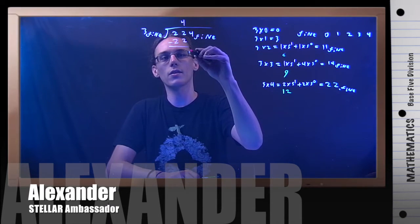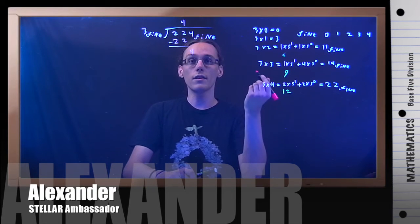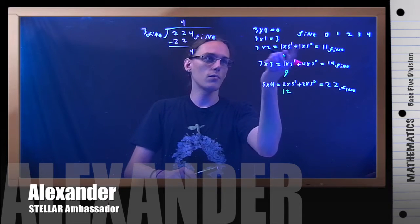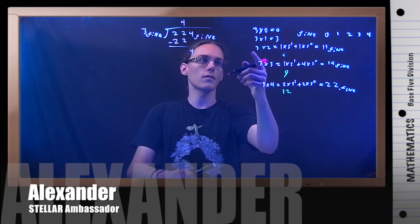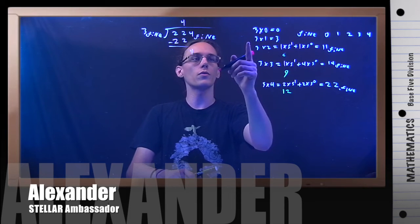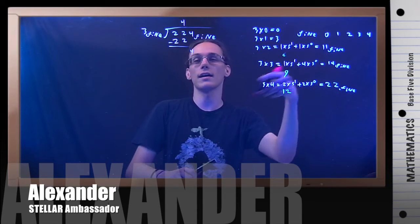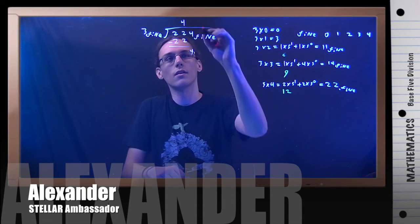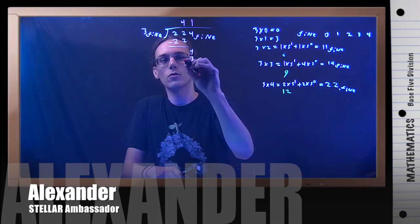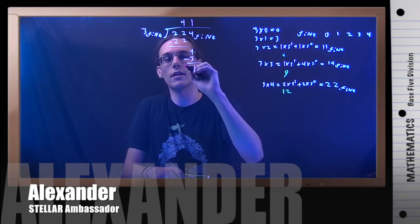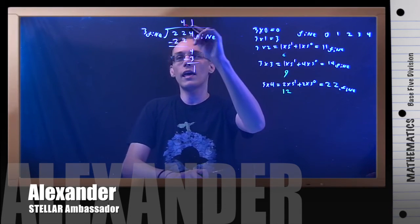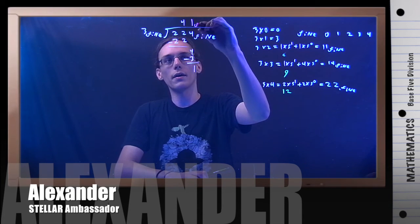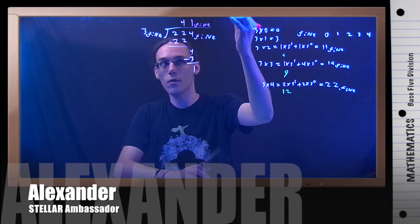That cancels out, so I'll bring down the 4. Now in base 5, does 3 go into 4? From our multiplication table: 3×1=3 and 3×2=11 in base 5, so 3 only goes in once. 1×3=3, subtract, and we have 1 left over. So 224 divided by 3 in base 5 gives 41 with a remainder of 1.